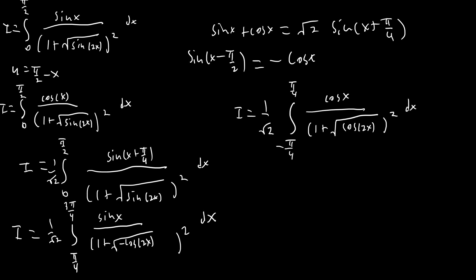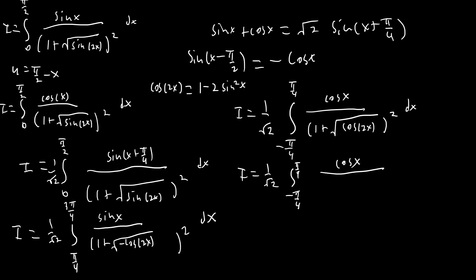Now we're going to rewrite cosine of 2x as 1 minus 2 sine squared of x. So i equals 1 over square root 2 times the integral from negative pi over 4 to pi over 4 of cosine x over 1 plus square root of (1 minus 2 sine squared of x), squared, dx. And now all we have to do is some simple straightforward substitution.